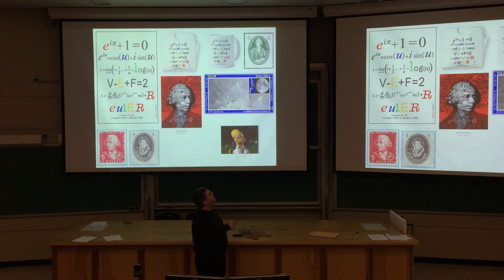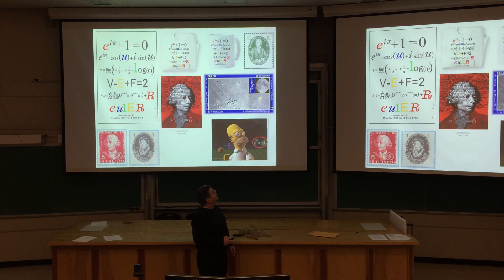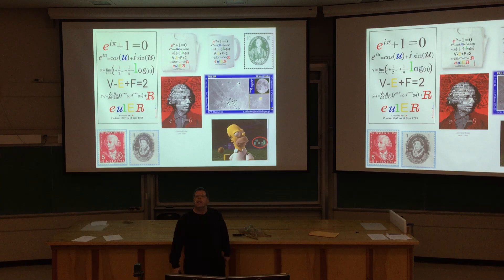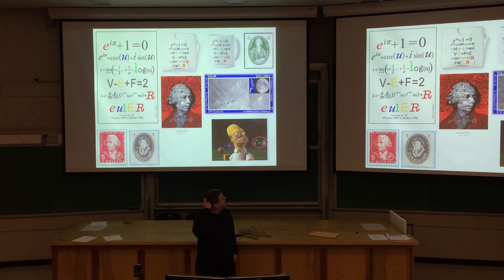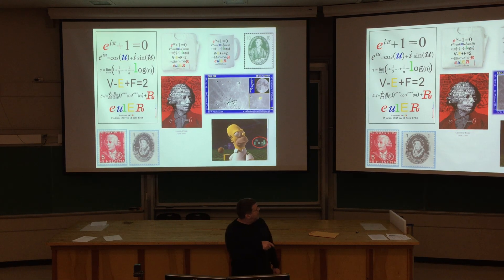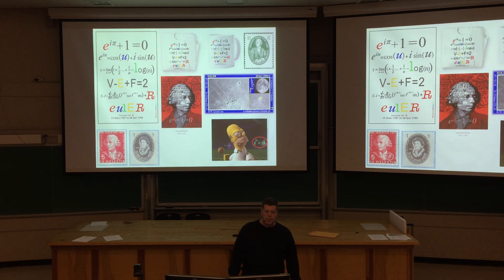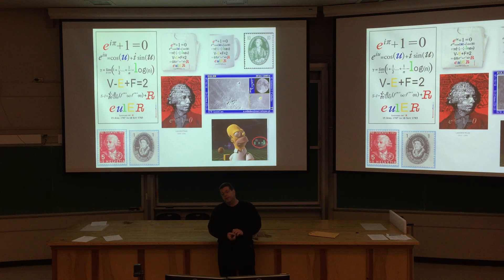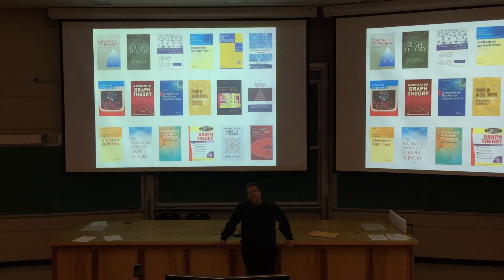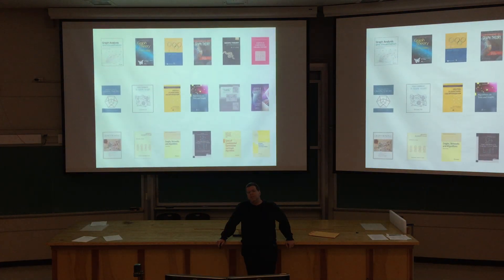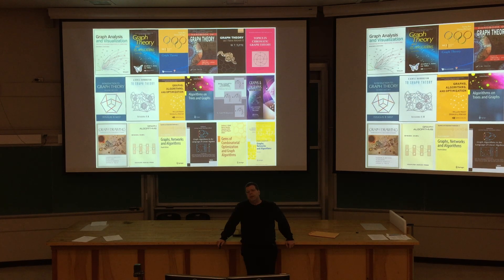Euler's formula involves all five famous constants: zero, one, e, π, and i — and all the arithmetic operations: addition, multiplication, exponentiation, and equality. It's hard to come up with a formula with that property — so simple, elegant, and ubiquitous. The Simpsons even has mathematicians on staff whose job is to insert little cute mathematical jokes and quirks into episodes. There are thousands of books on graph theory and entire conferences happening every year — it's a very booming field that's been flourishing for a couple of centuries, along with multiple dedicated journals.